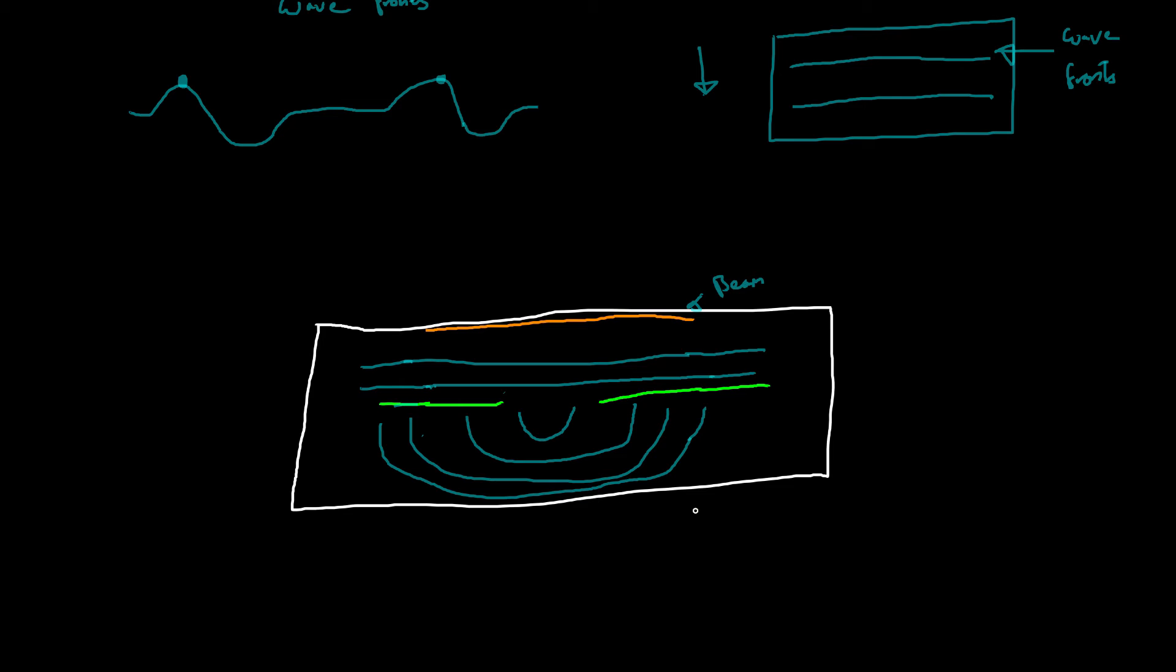Now this only works to a point because if we made these barriers extremely close together, so there's a tiny gap, then diffraction will almost stop. So there is a point where diffraction sort of is at its highest. So in general though, the narrow gap equals more spread, or you could also say greater diffraction.